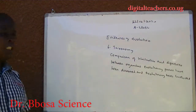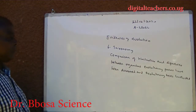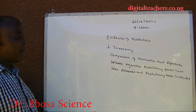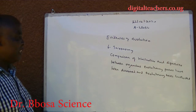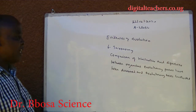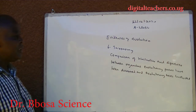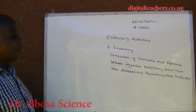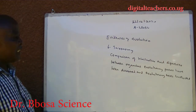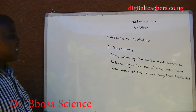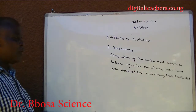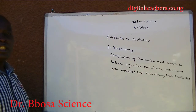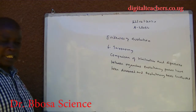Six: taxonomy. Comparison of similarities and differences between organisms. The evolutionary processes have been discovered and evolutionary trees constructed.